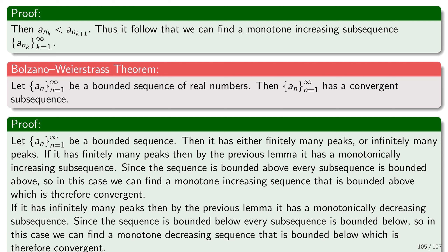Similarly, every monotonically decreasing sequence bounded below must be convergent, both following from the completeness axiom and the existence of supremum and infimum. Then for every sequence we have proved — by analyzing the peaks — that it has either a monotonically increasing or monotonically decreasing subsequence. Therefore, if the sequence is bounded, it has a bounded monotone subsequence, which must be convergent. As a result there are in fact infinitely many convergent subsequences, since changing finitely many initial elements does not affect convergence. This is the easiest proof of the Bolzano-Weierstrass theorem.